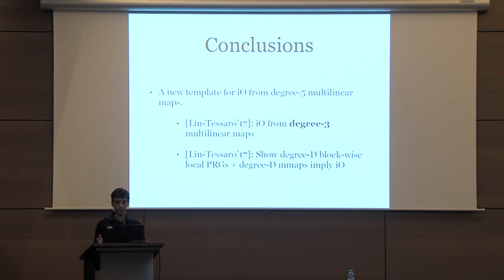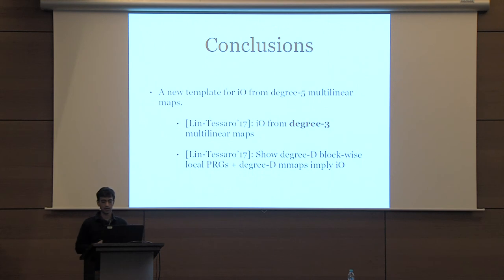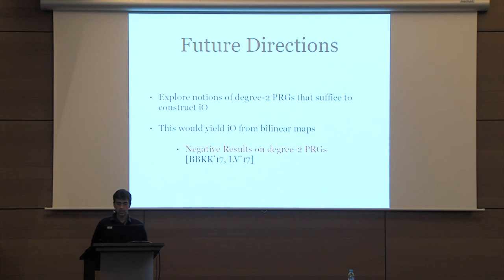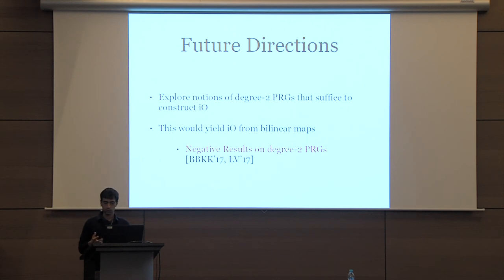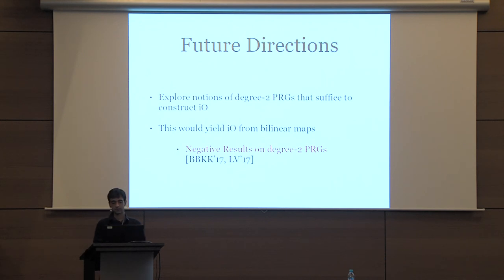In this work we give a new template to get IO from degree-5 multilinear maps. Lynn and Tesoro showed how to get IO from degree-3 multilinear maps, defining the notion of blockwise local PRGs and giving a degree-preserving transformation from blockwise local PRGs to IO. One question to explore is: what is the right kind of PRG definition that suffices to construct IO? In particular, can we define a notion of degree-2 PRGs that suffices to get IO? This would yield IO from bilinear maps. However, recently there have been negative results on degree-2 PRGs for some definitions.